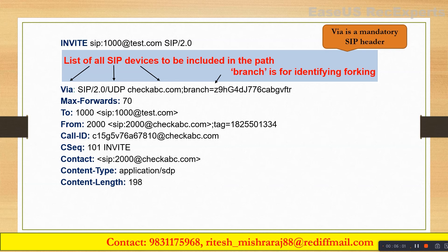If you have a firewall or any other SIP device between your Call Manager and the CUBE, the call flow becomes: IP phone, Call Manager, firewall, and the CUBE. When the INVITE reaches the CUBE it will have two Via headers. The first Via header will indicate the details of the firewall, and the next Via header will tell you the details of the Call Manager. The first Via header is of the firewall since it's closest to the CUBE, and the next Via header is of the Call Manager.